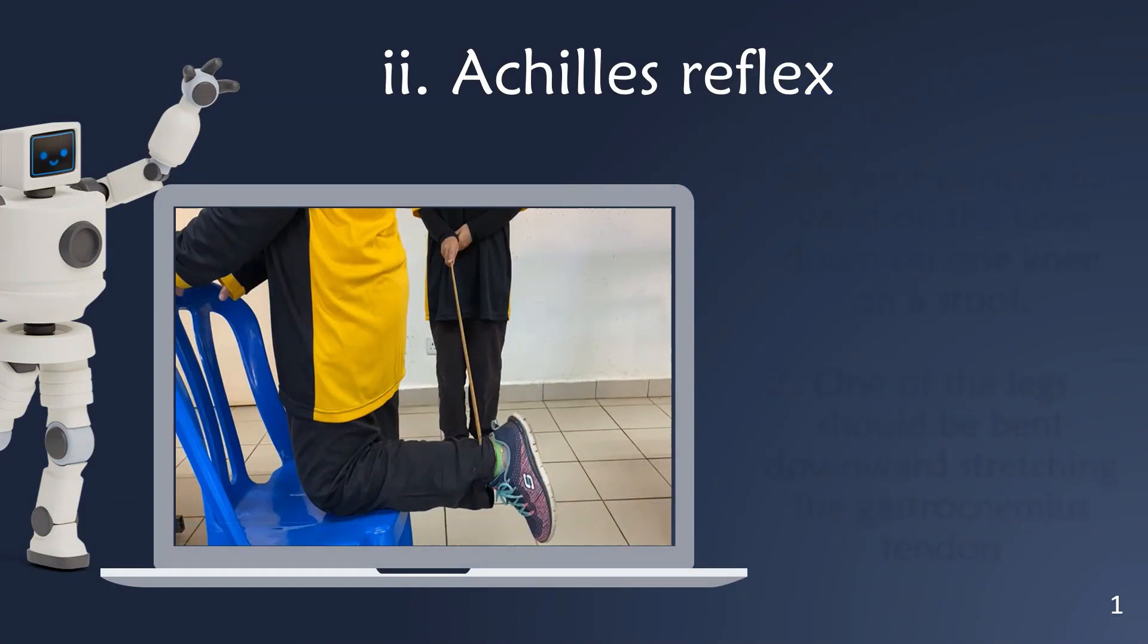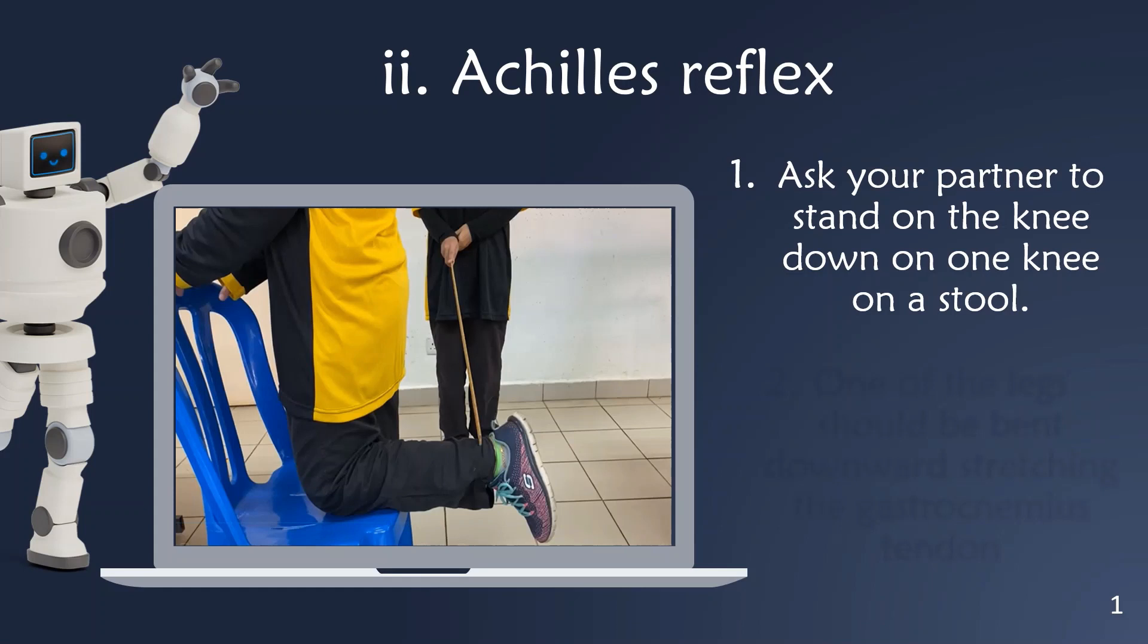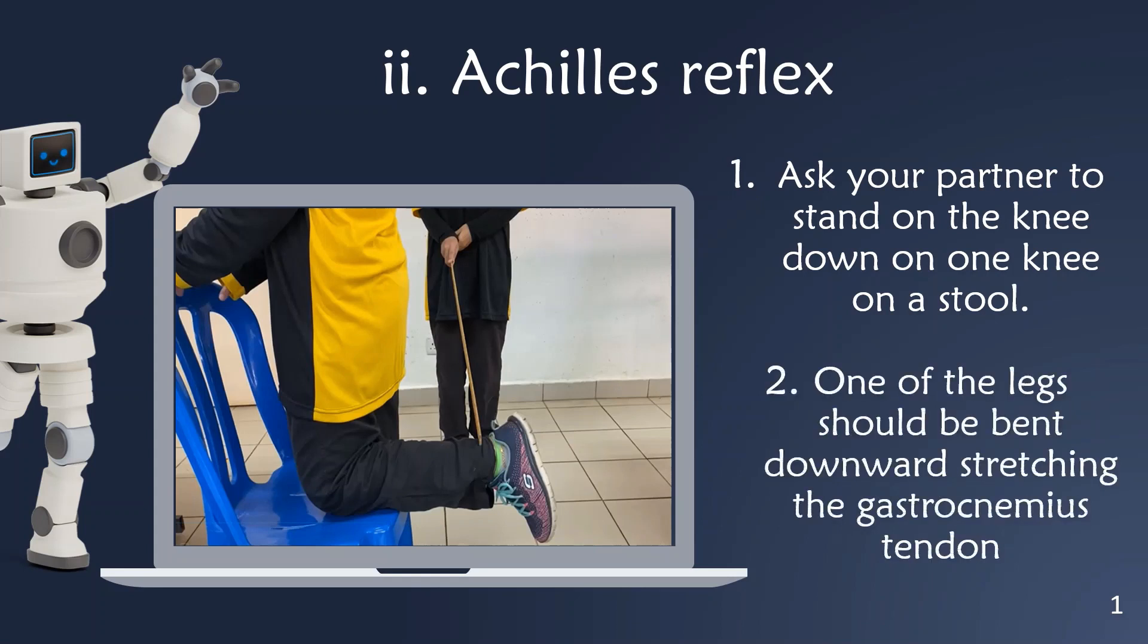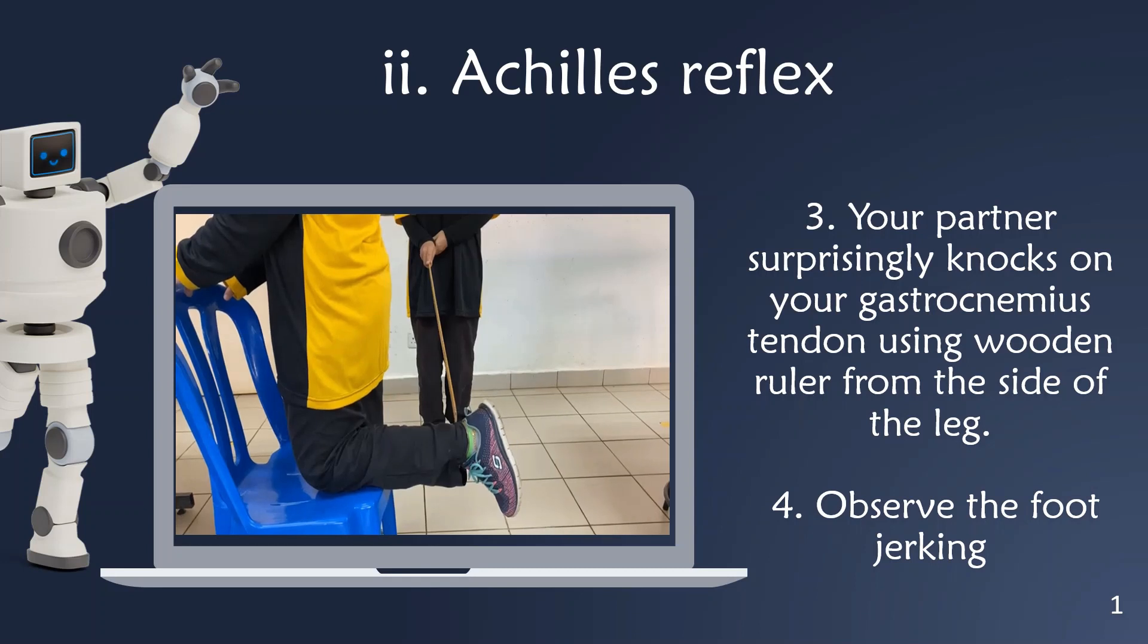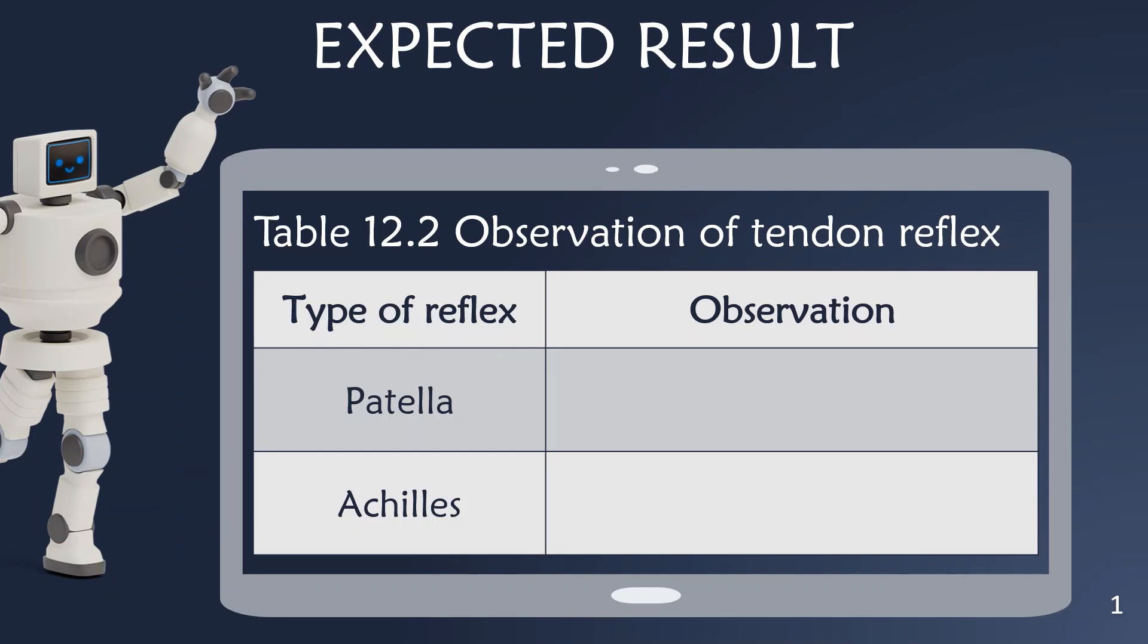To observe the Achilles reflex, firstly, ask your partner to kneel down on one knee on a stool. One of the legs should be bent downward, stretching the gastrocnemius tendon. Then your partner surprisingly knocks on your gastrocnemius tendon using a wooden ruler from the side. Observe the foot jerk. The result obtained from this experiment should be recorded in table 12.2, Observations of Tendon Reflex. The expected results for this experiment are as follows.